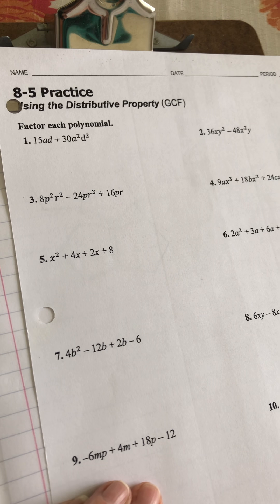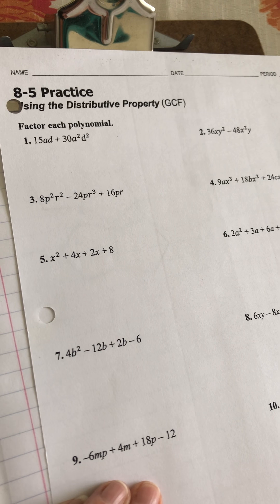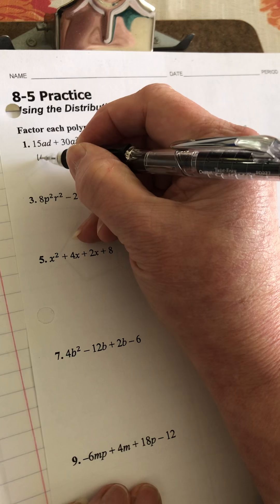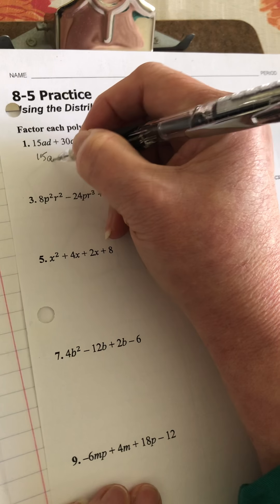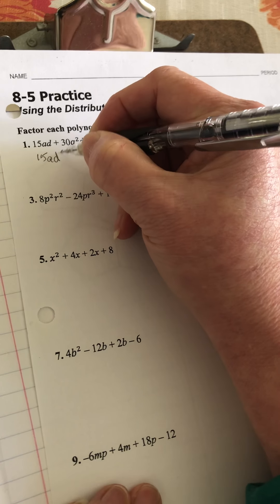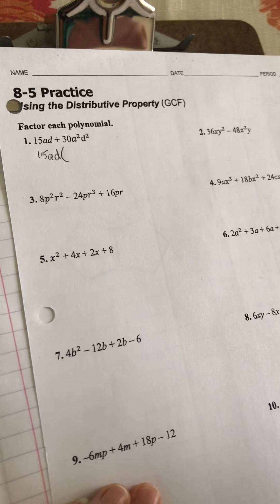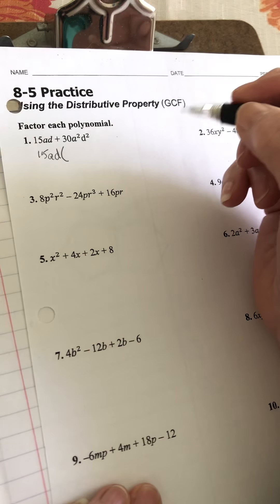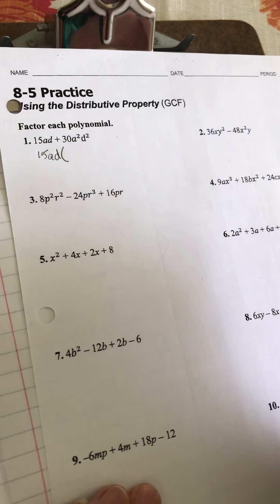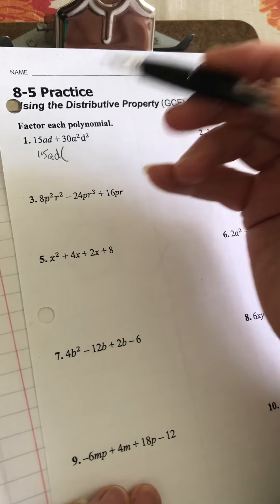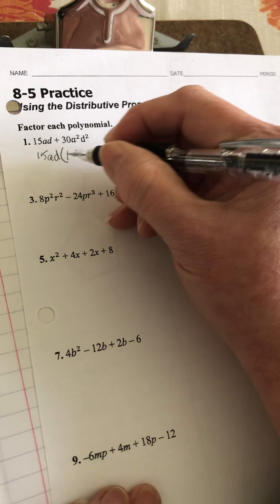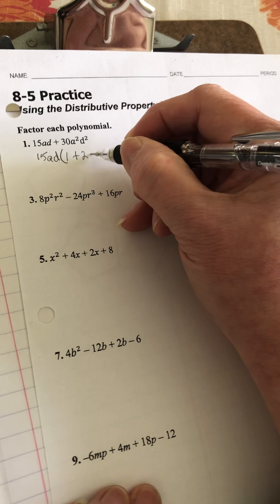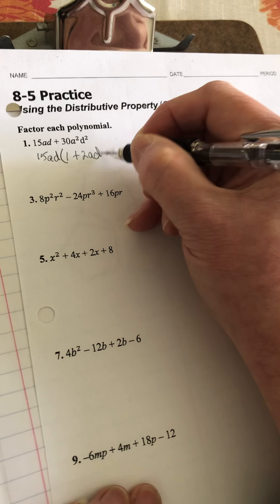If I look at number 1, 15 and 30, well, 30 is a multiple of 15, so I know that both of them are divisible by 15. They both have 1a and they both have 1d, so my GCF is 15ad. Because I started with a binomial, my chunk also has to have a binomial. 15ad goes into 15ad once, 15 goes into 30 twice, and I'm going to have an a left and a d left.